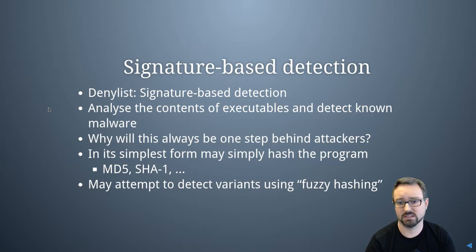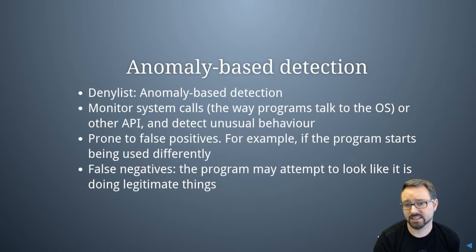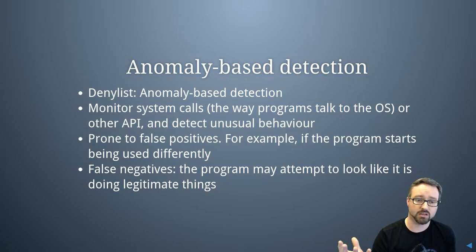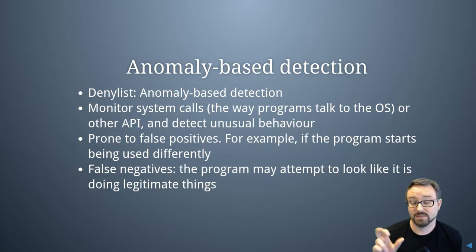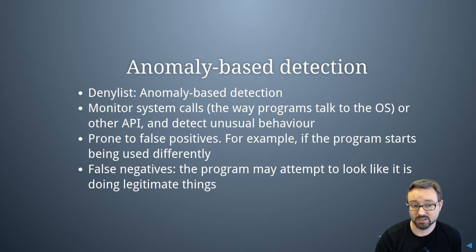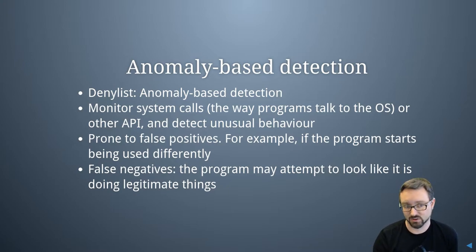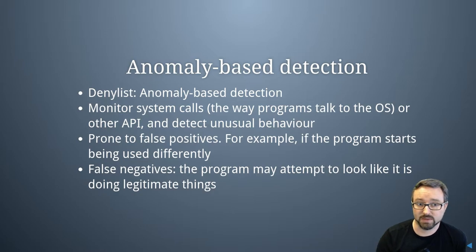Anomaly-based detection is also often used as a deny list approach. You monitor the behavior of a system or network, and when you see software doing something unexpected, you shut it down. For example, you could monitor the system calls a program makes — if it suddenly acts differently from what you've seen before, that might indicate it's malicious. Similarly, if software suddenly appears on a system and does things not normally done on that system, that's anomalous behavior and you can shut it down.